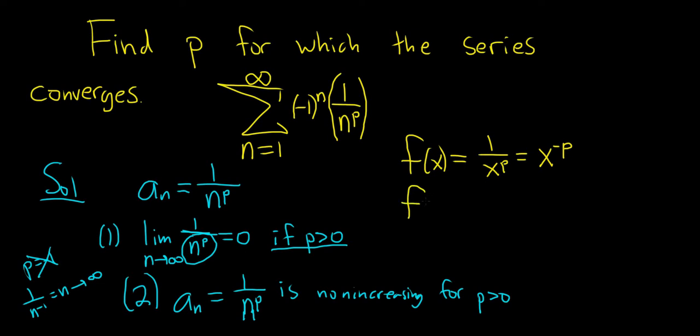Remember, a negative derivative will mean that your original function is decreasing. So f prime of x is equal to, let's see, we'll put the negative p in the front, just using the power rule. Then we have x to the negative p minus 1.